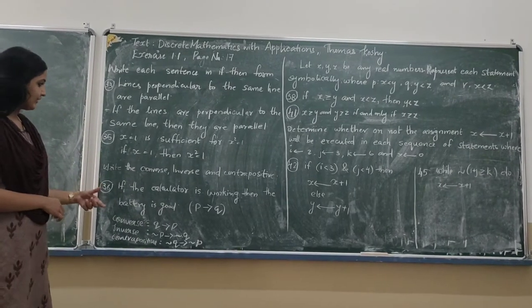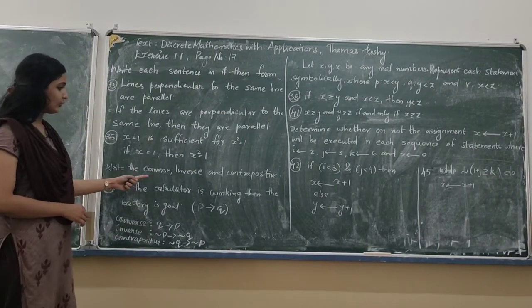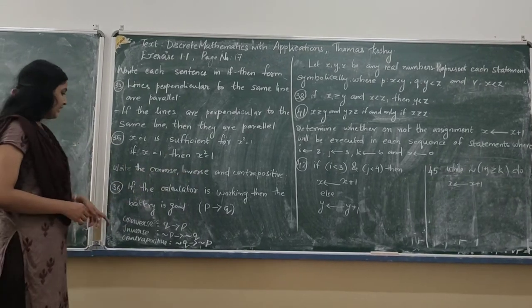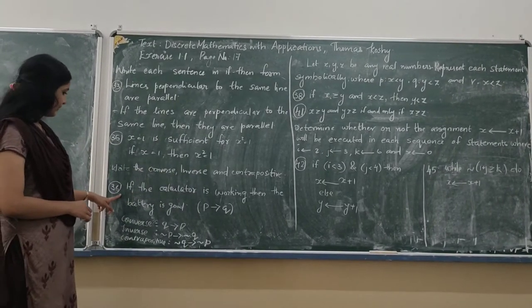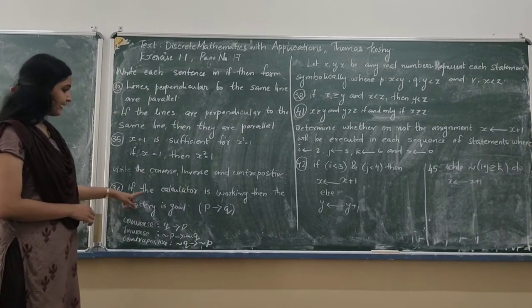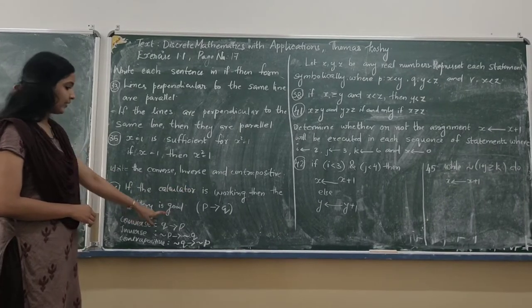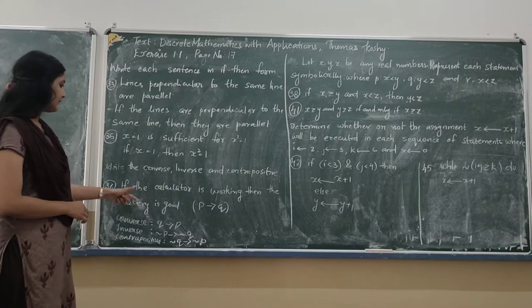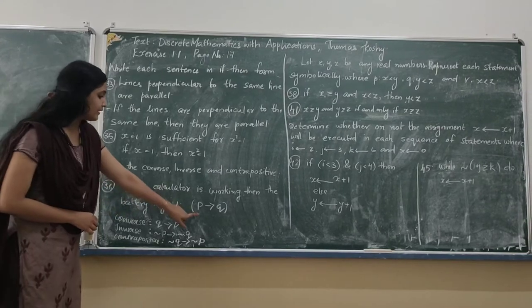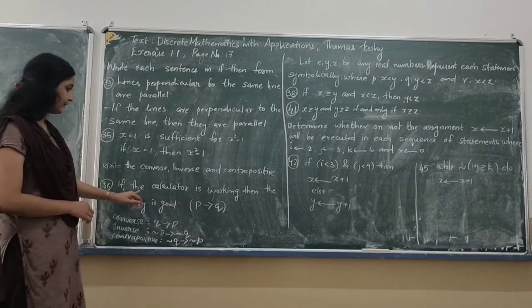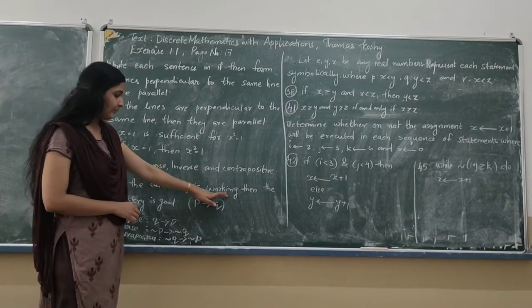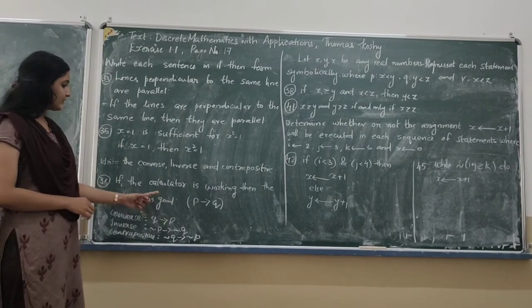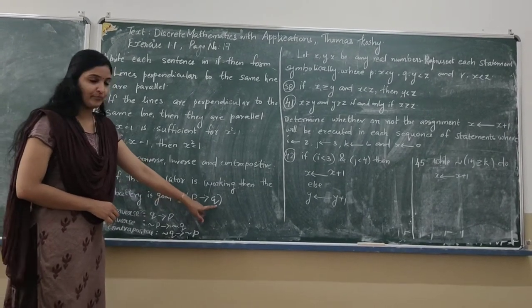Now moving on to the next question: write the converse, inverse, and contrapositive of the given statement. Question number 36: if the calculator is working then the battery is good. This statement is in the if-then form. We consider statement P as 'the calculator is working' and Q as 'the battery is good.' So the statement is in the P implies Q form.